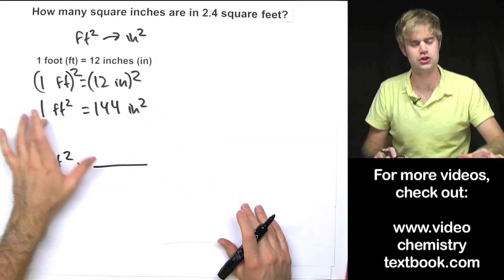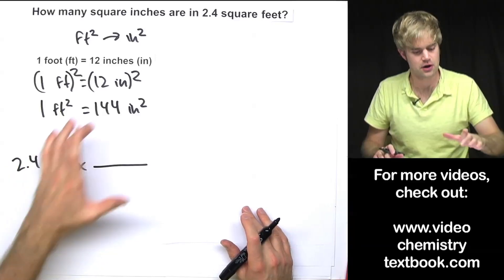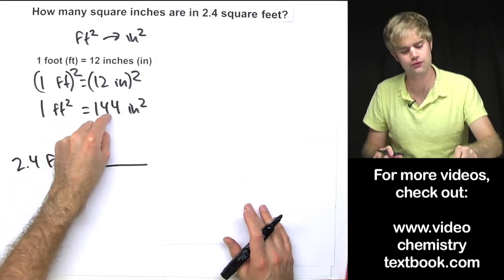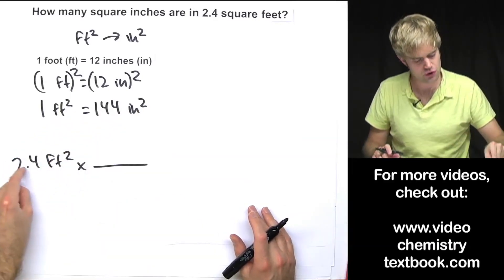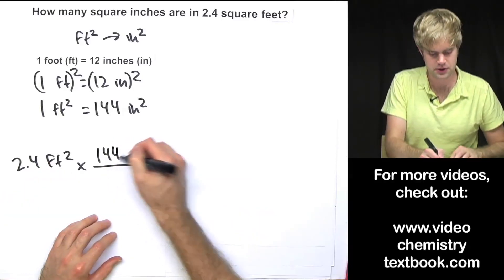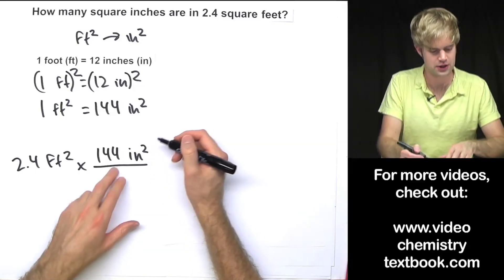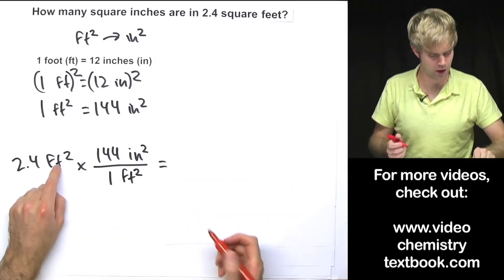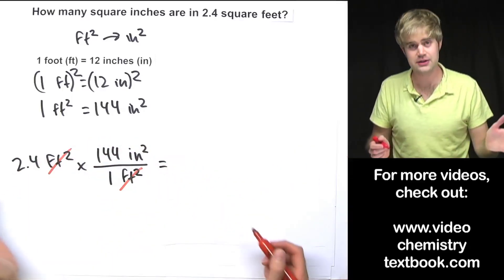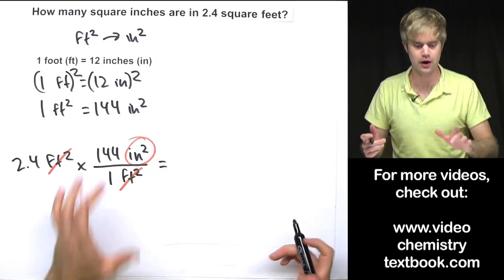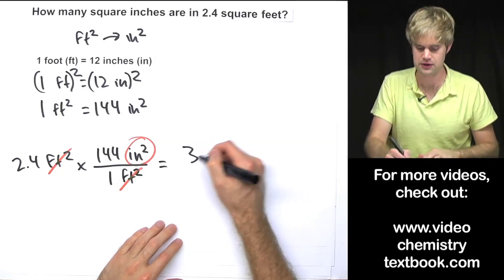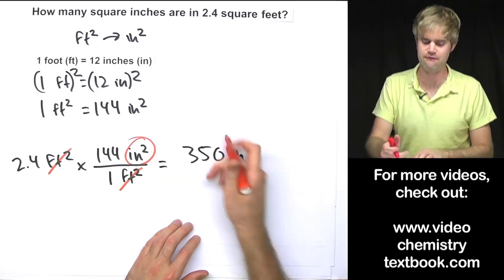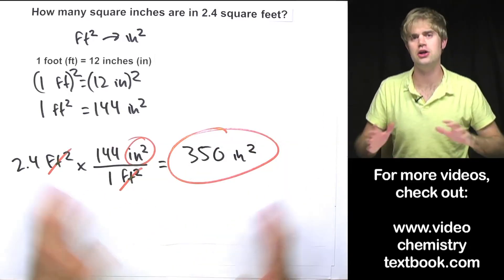Now I can use this relationship to make a conversion factor that has square feet. This is saying that for every 1 square foot I have, I have 144 square inches. Since I have 2.4 square feet, I'm going to multiply by 144 square inches over 1 square foot. The square feet cancel, leaving me with units of square inches. Doing 2.4 times 144 divided by 1, rounded to two significant figures, equals 350 square inches.